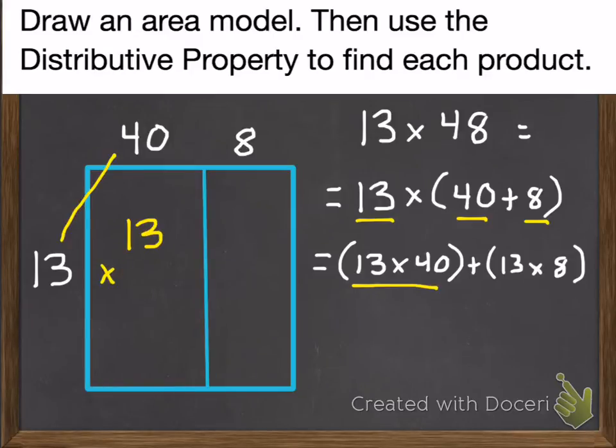Put the number with a 0 on the bottom. Multiply our 1s first. 0 times 13 is 0. Then multiply our 10s. 4 times 3 is 12. And 4 times 1 plus 1 is 5. Okay, now that we've got 520 for that part, we're going to multiply the 13 times the 8.